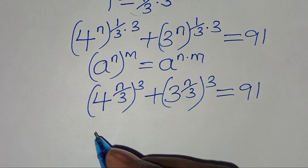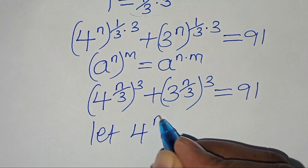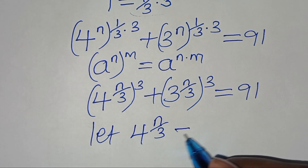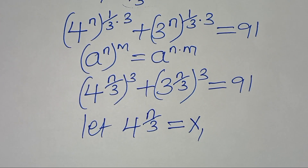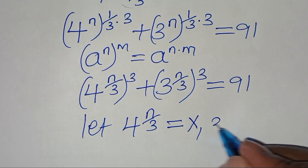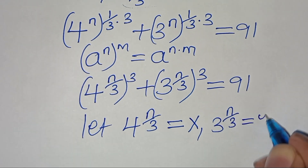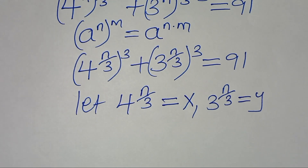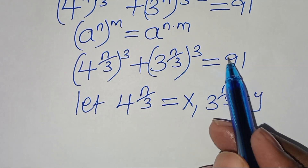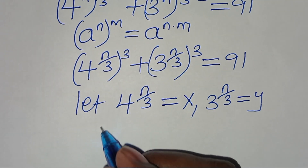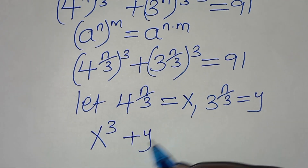Now let x equal 4 raised to the power n over 3, and y equal 3 raised to the power n over 3. Substituting x and y into the equation, we have x cubed plus y cubed equals 91.